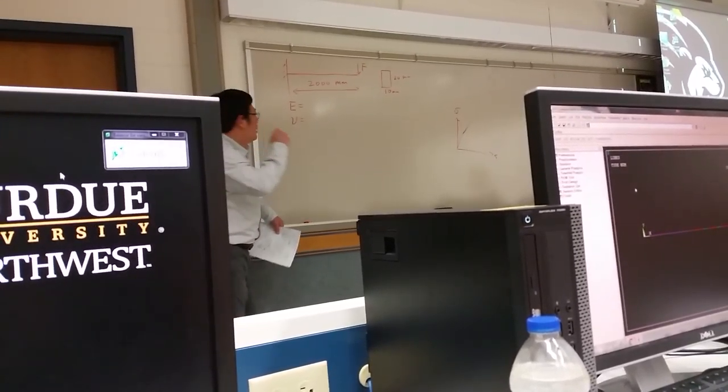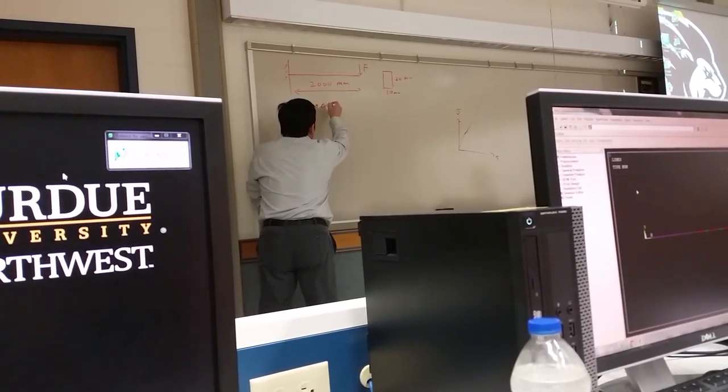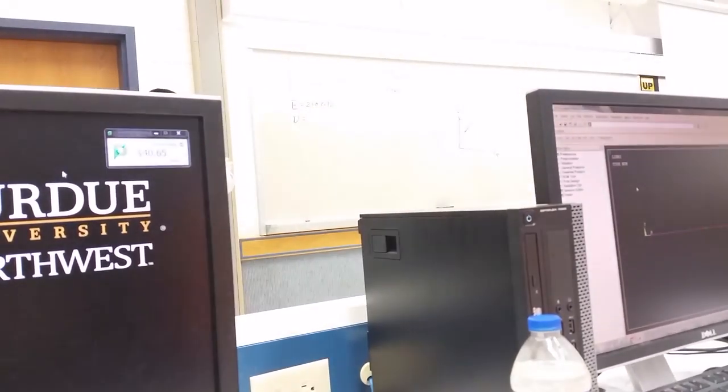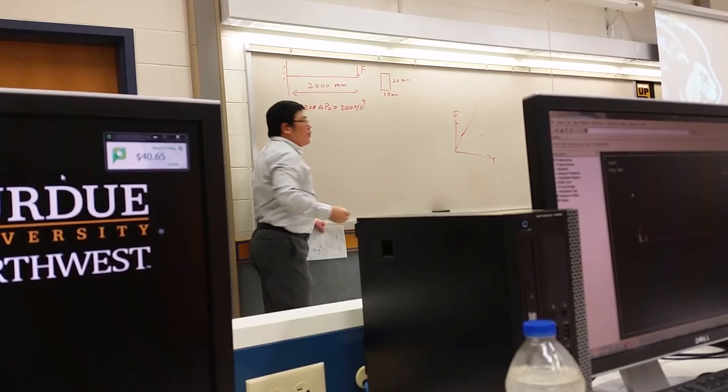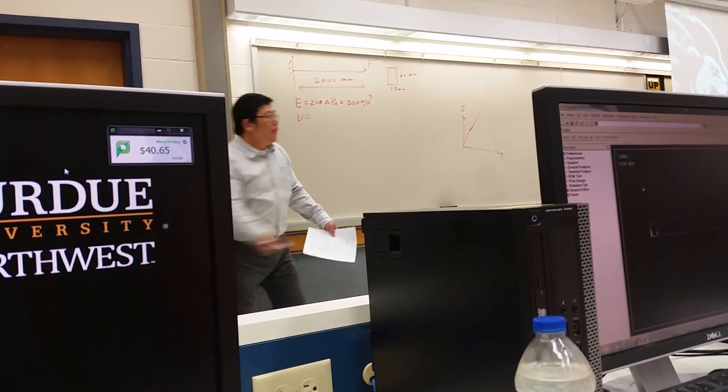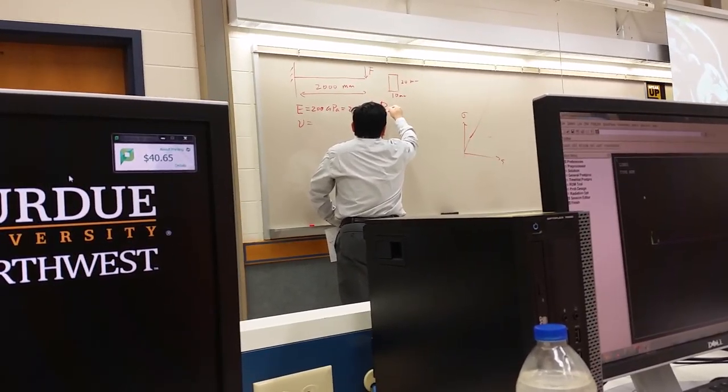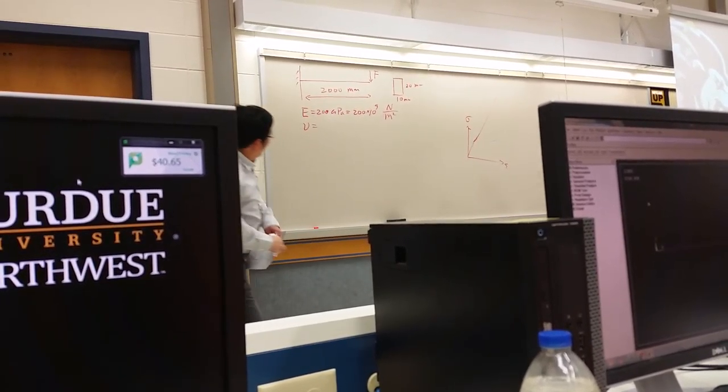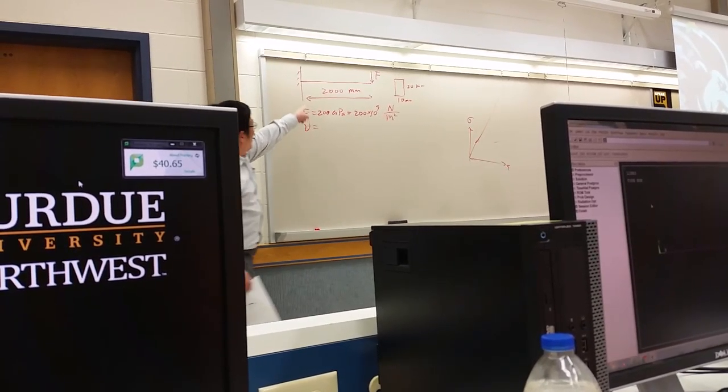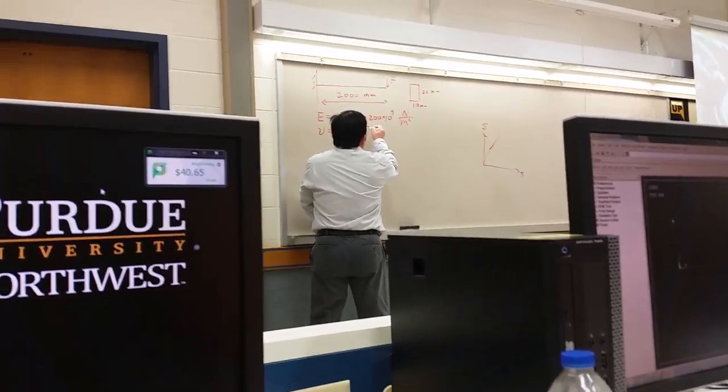I use the metric unit system. From a reference book, I learned that is 200 gigapascals. 200 gigapascals. But that means 200 times 10 raised to the power of 9, correct? That is the pascals. That is the pascals. The pascals is what? Pascals is Newton per meter squared. Here, the unit of length is meter. But I use the millimeter. So I have to change it. So I get 200 times 10 to the power of 9, Newton.